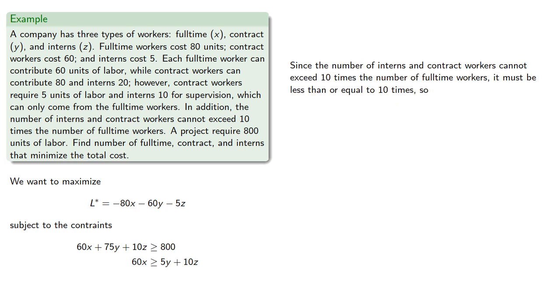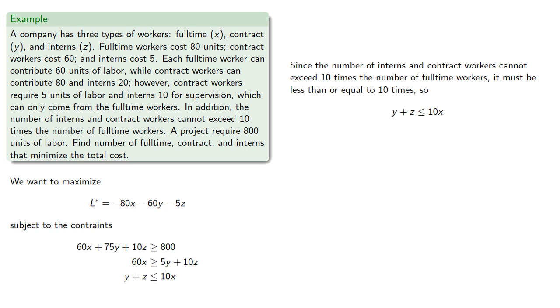And finally, since the number of interns and contract workers cannot exceed 10 times the number of full-time workers, it must be less than or equal to 10 times. And so that gives us another inequality. So we'll need to rewrite these in standard form so that these are always less than or equal to some upper limit. And so we get...